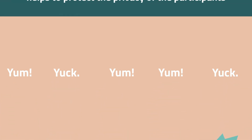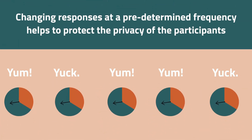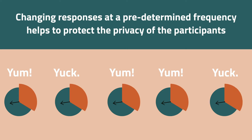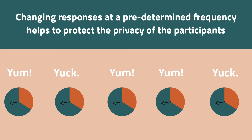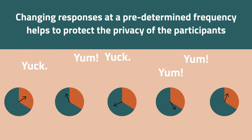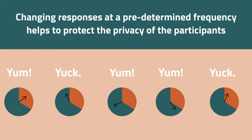To protect their privacy, we change some of the responses at a predetermined frequency. This is indicated by the red area on these spinners. Any time it lands on red, we change the response. And as long as we don't know which responses have been changed, there's no way to figure out any single individual's information.